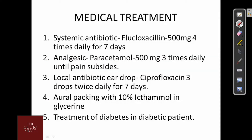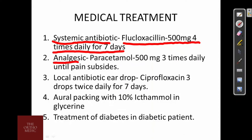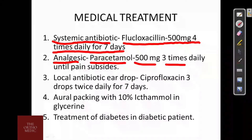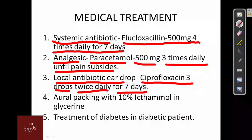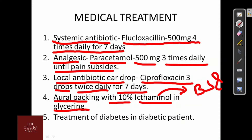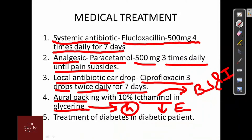For medical treatment, the first line is systemic antibiotic: Flucloxacillin 500 mg four times daily for 7 days. Then analgesic Paracetamol 500 mg three times daily for pain until it subsides. Local antibiotic eardrop Ciprofloxacin 3 drops twice daily for 7 days is given. Aural packing with 10% Ichthammol in glycerine — Ichthammol acts as a bacteriostatic and irritant agent, while glycerine acts as a hygroscopic agent which reduces the edema.